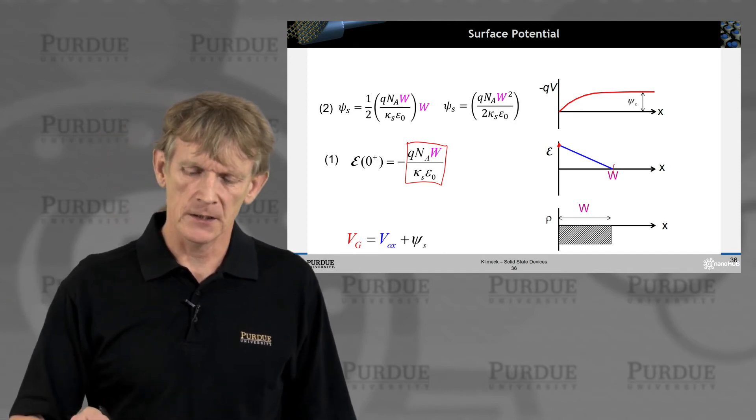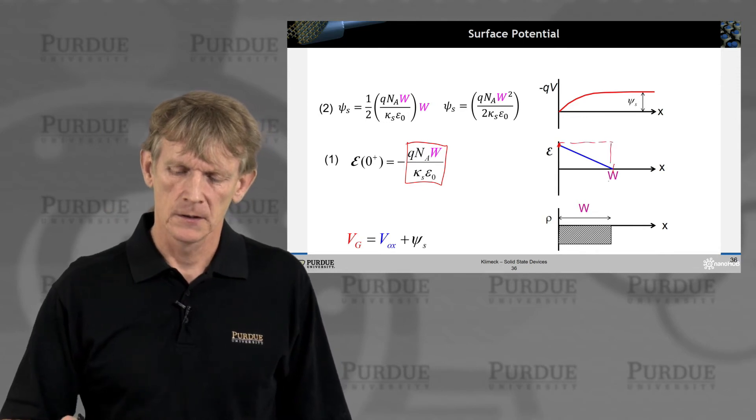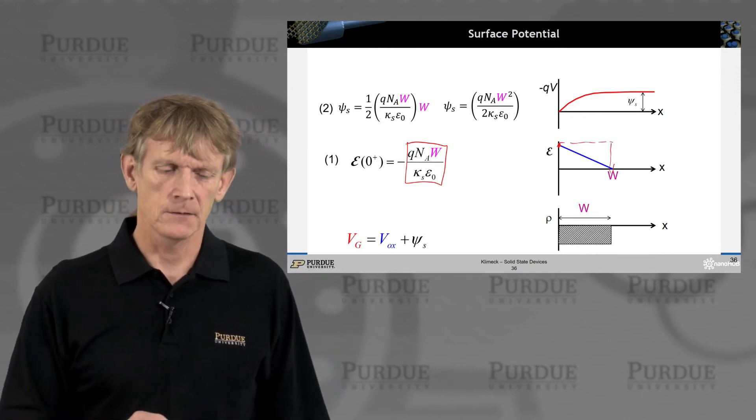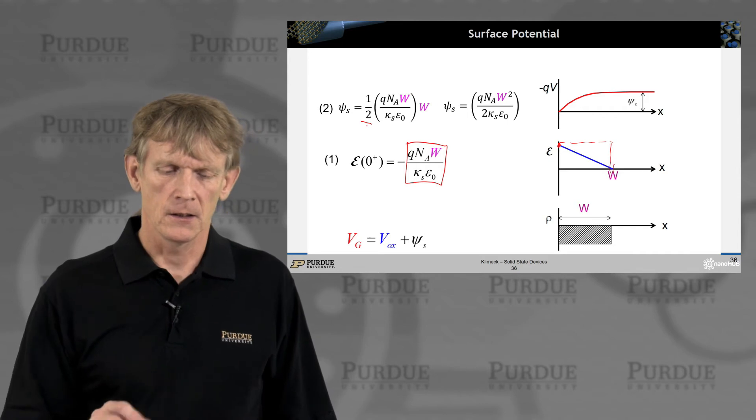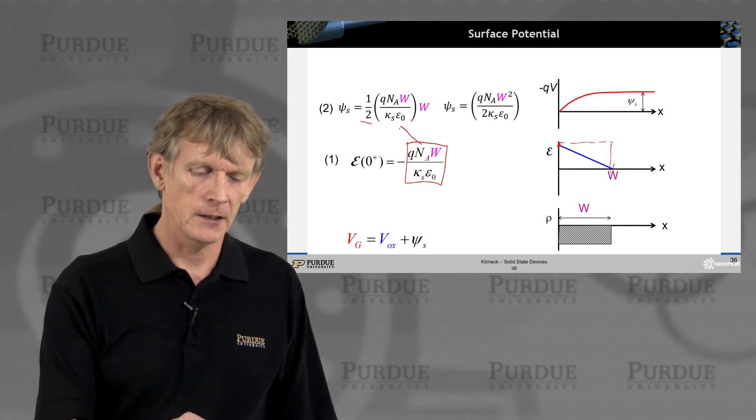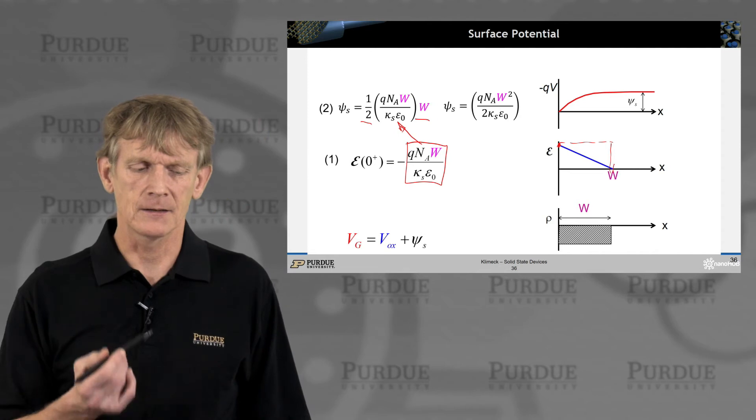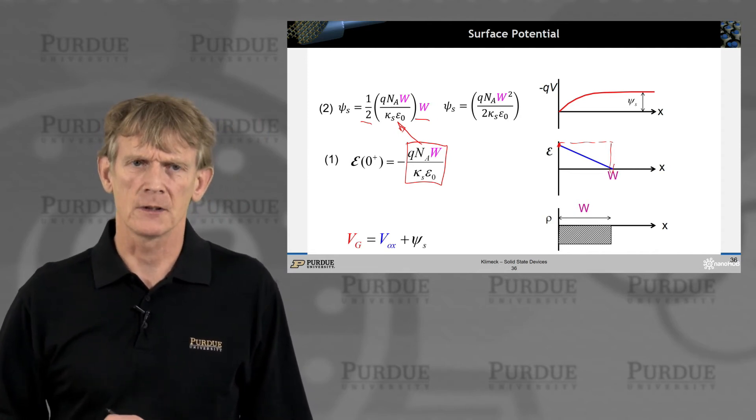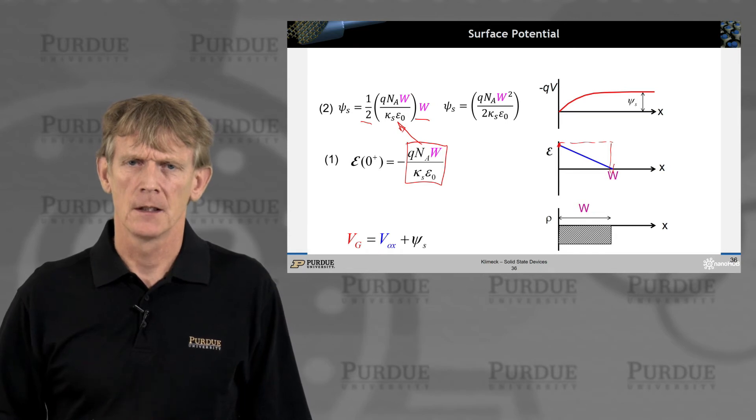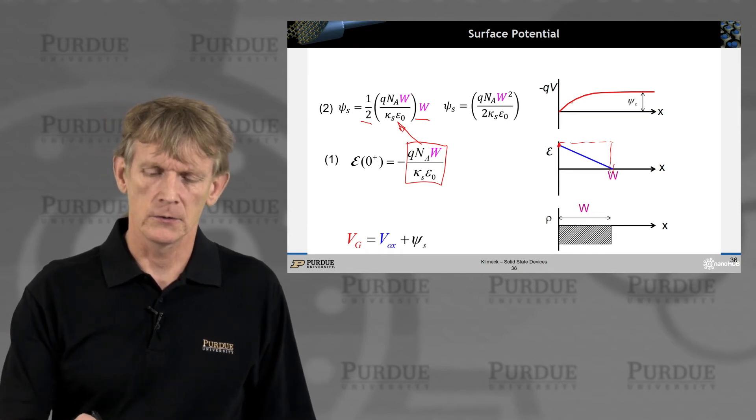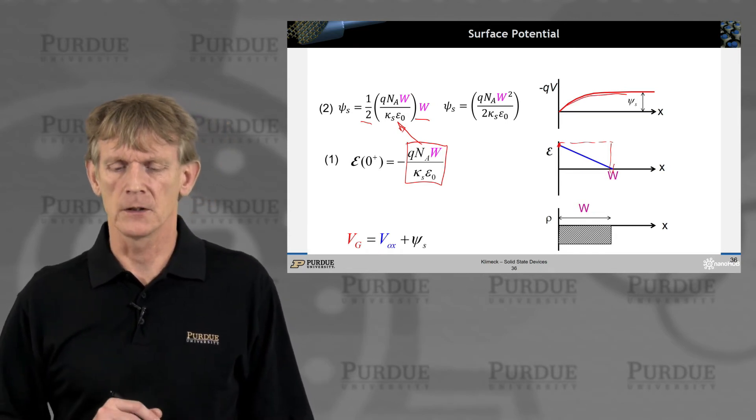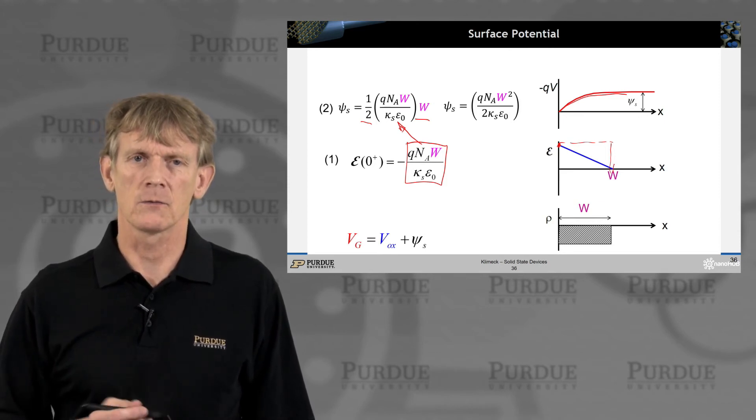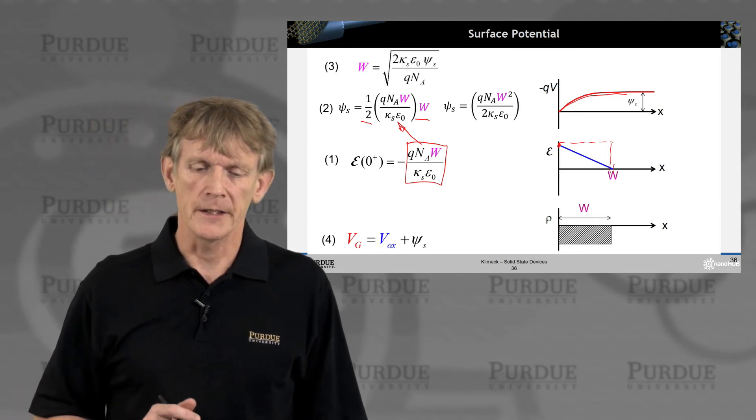So, what is that potential? Well, it's half of this rectangle. So, one-half of the electric field, which we plug in, times the width of this. That gets us, if we multiply this out, the surface potential. And it goes like a, if you integrate that out, like a square.